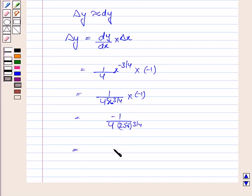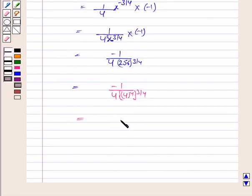So this is equal to minus 1 upon 4 into 256 can be written as 4 to the power 4. And it is power 3 by 4. So this is equal to minus 1 by 4 into 4 to the power 3. And this is equal to minus 1 upon 256.